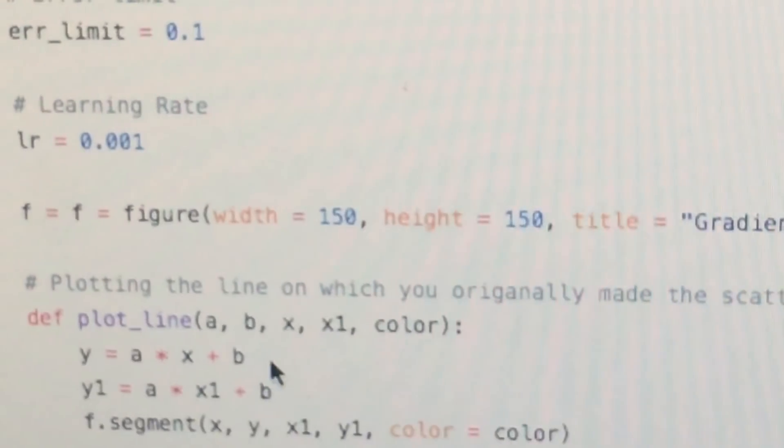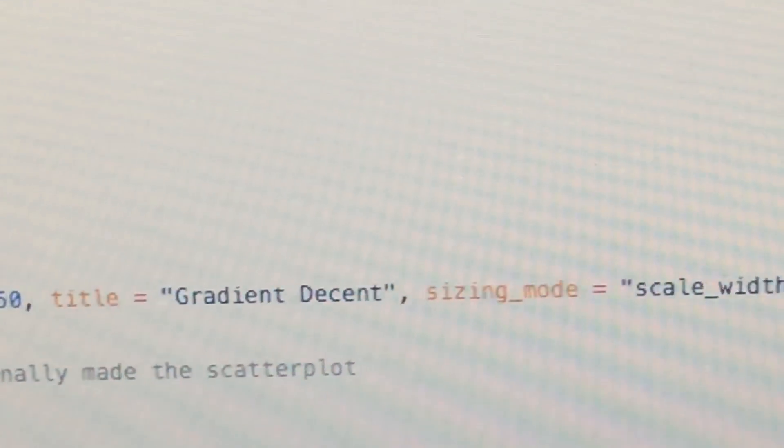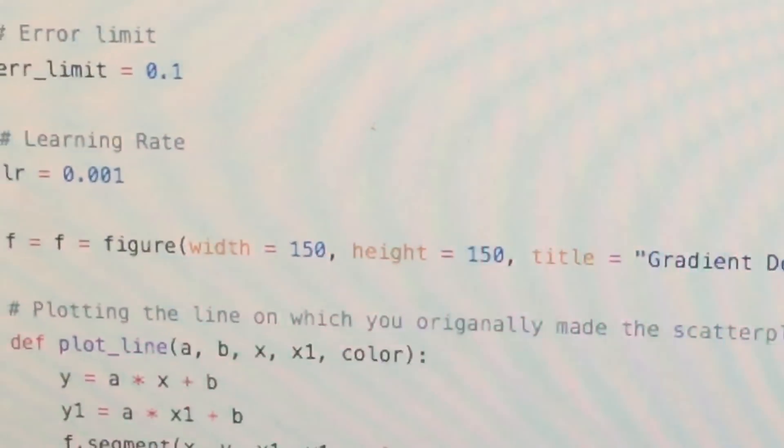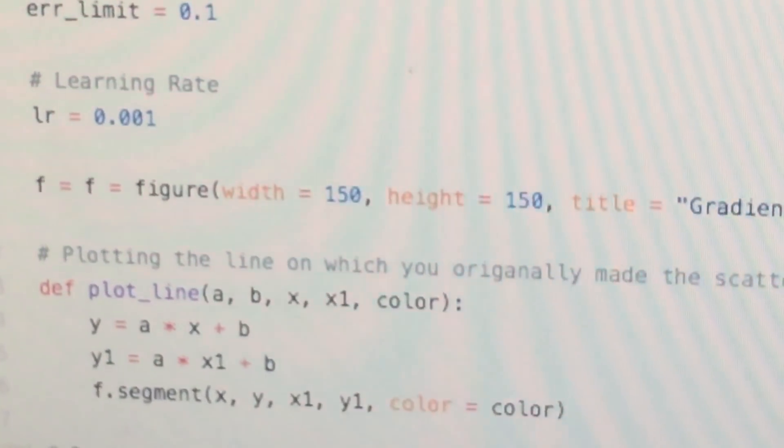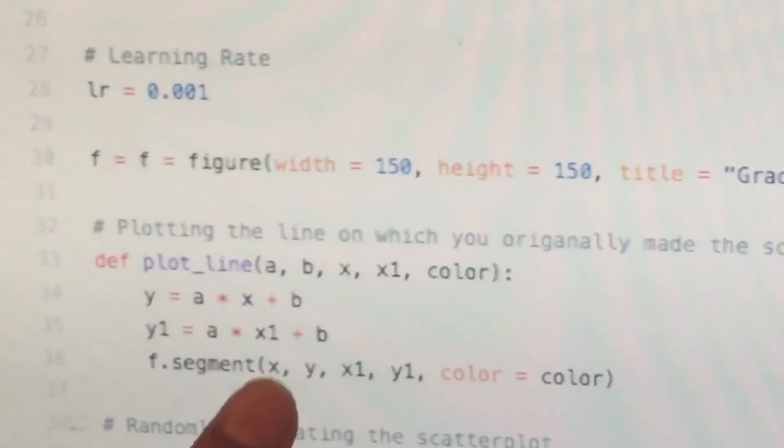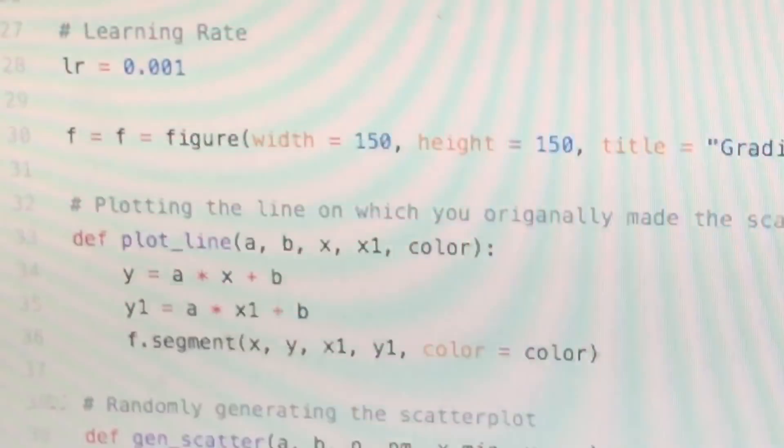This f is the figure object. So this now is plotting the line on which you originally make the scatter plot over. You need a, b, X1, X, and color. So color it's just for fun. And this X will calculate the Y and X1 will calculate the Y1, and these two will make a point and these two will make a point and they're connected.